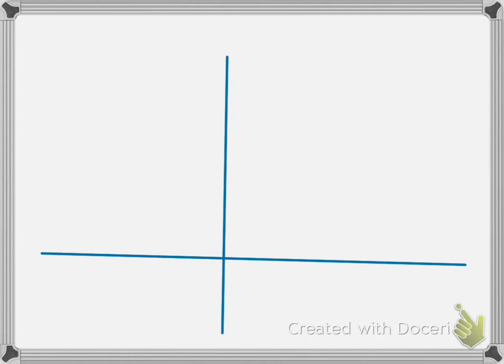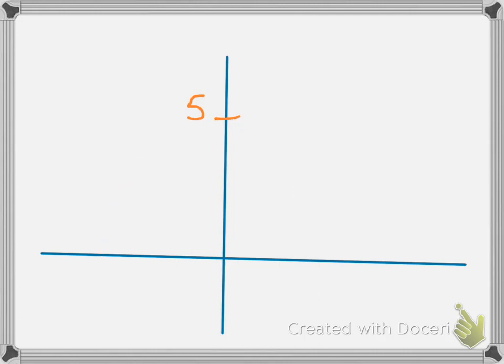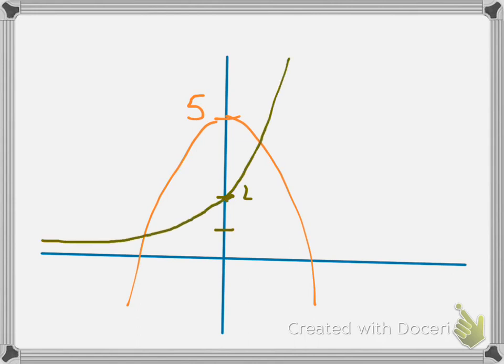Let's sketch this out. We know that the parabola 5 minus x squared intersects the y-axis at 5 and looks like a typical parabola. The exponential normally intersects at (0,1), but since we're shifting it up 1, it's going to intersect at (0,2) and then it curves upward like this. So obviously we have two points of intersection.